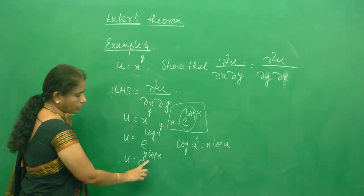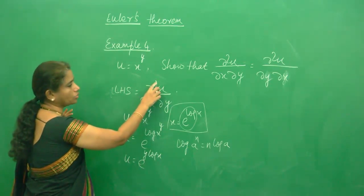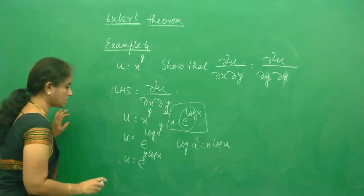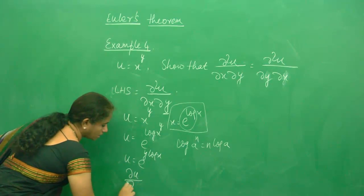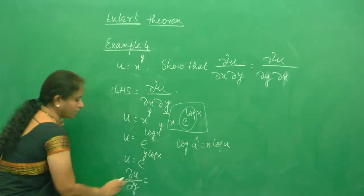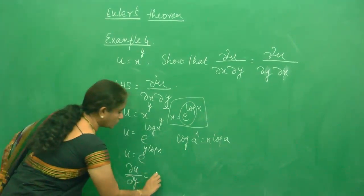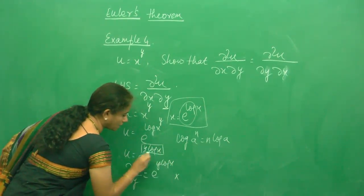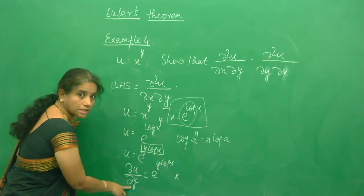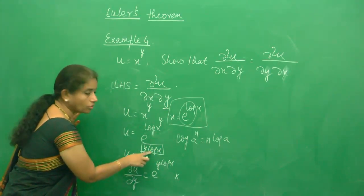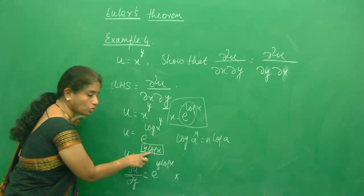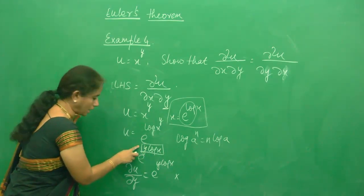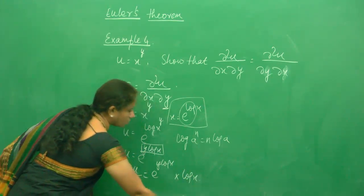So u = e^(y log x). To find ∂²u/∂x∂y, I differentiate with respect to y first. So ∂u/∂y = e^(y log x) times the derivative of y·log x with respect to y. Since x is a constant when differentiating with respect to y, log x behaves like a number, and the derivative of y is 1. So ∂u/∂y = e^(y log x) · log x.